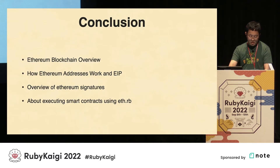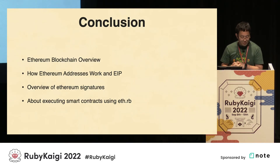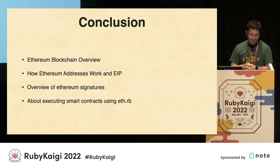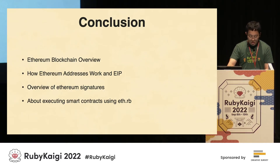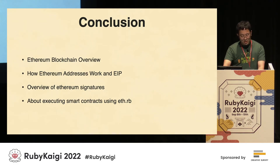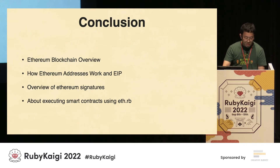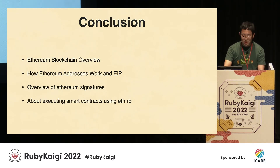In conclusion, today I explained the overview of the Ethereum blockchain, the address mechanism, signatures, and EIPs with eth.rb, and explained smart contract execution with eth.rb.